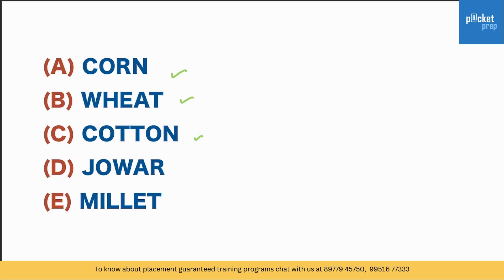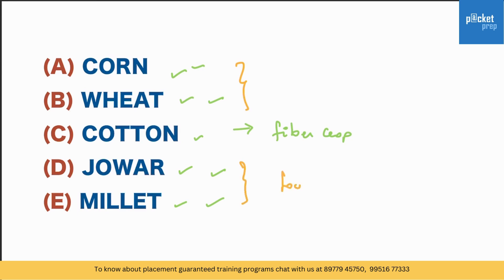Then we have: corn, wheat, cotton, jowar, millet. At first glance we might feel all of them are crops, and in fact they are all crops. But think in terms of eating — we can eat corn, wheat, jowar, and millet, but do we eat cotton? No. Cotton is actually a fiber crop and the rest are food crops. Therefore cotton is the odd one out.